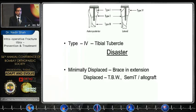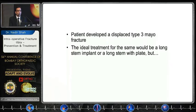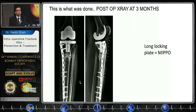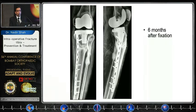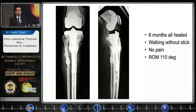Type 4, involving the tibial tubercle, is a disaster — minimally displaced cases can be managed with a brace in extension, whereas displaced cases require tension band wiring with a suture or allograft. Here is a case illustration of a 60-year-old male with severe osteoarthritis who developed a displaced Type 3 fracture. The ideal treatment would be a long stem implant with or without a plate. A long locking plate using MIPO technique was performed; at six months the fixation was revised to a tibial component with stems. Available bone was used as graft, and at six months everything healed well — the patient was walking without a stick, pain-free, with a range of motion of approximately 110 degrees.